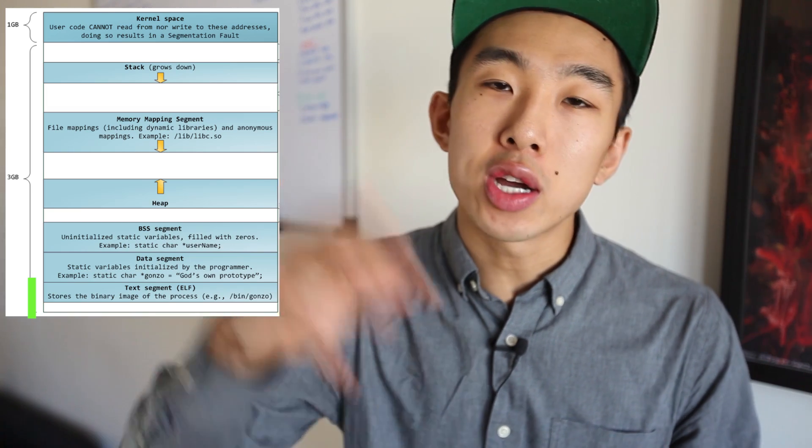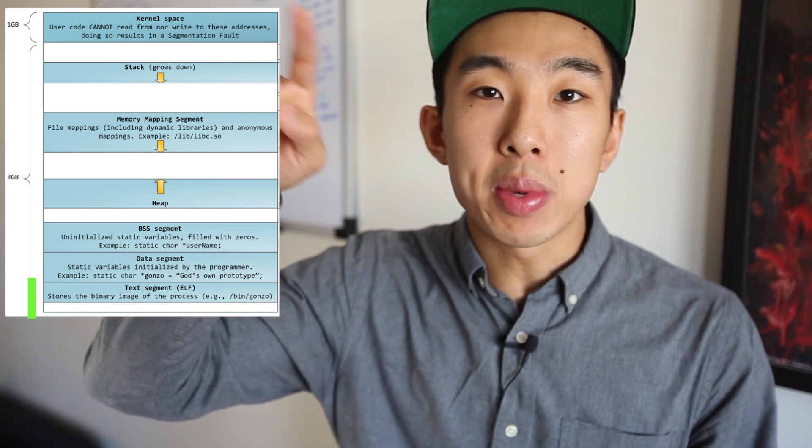Starting at the bottom, the first section of this memory layout is where the process's program code and data are stored. Remember that every single process running on your computer right now — there's hundreds of processes running. Each one of those came from source code that somebody wrote at some point in time. You wrote a program, compiled it, built it down to an executable. All those millions of lines of code have to be translated into machine instructions, and those machine instructions go in this section of the memory.